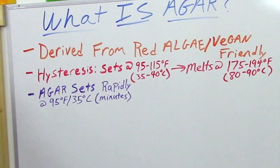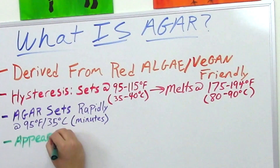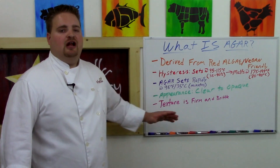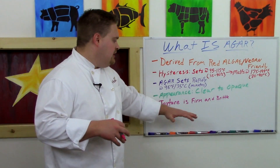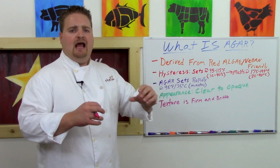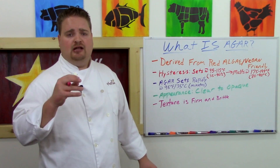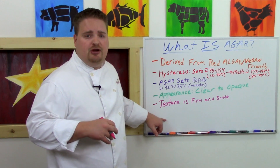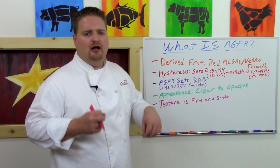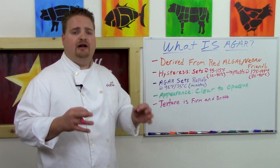An agar gel visually can range anywhere from crystal clear to opaque depending upon the source of your agar, so you'll have to play around with different sources if you want a really clear agar gel. It also has a texture ranging from firm to brittle. If you use too much agar in your gel formulation, you can turn a gel into something crumbly, and because it has such a high melting point it's not going to melt in your mouth like a gelatin gel will.